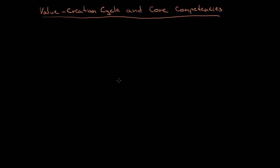In this chapter we are going to talk about design and strategy. The best way to start is with the value creation cycle and the core competencies of companies. So let's begin with the creation cycle. If you have watched one of my first videos, we talked about scarce resources — so we begin with scarce resources.